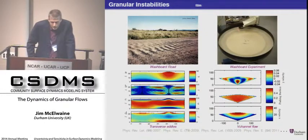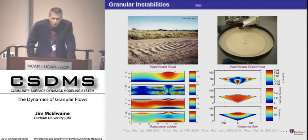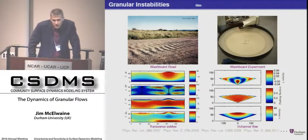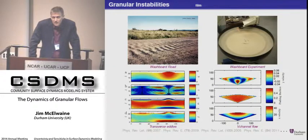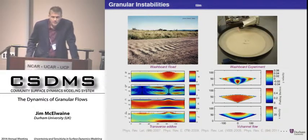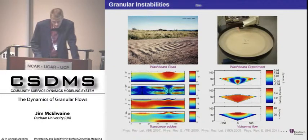In places like Arizona and Utah you get Washboard Road, which is a small-scale granular instability. There are lots of other types of patterns you can get — whether it's wind blowing sand around making ripples and dunes, or rivers leaving all sorts of bedforms at the bottom. By combining lab experiments, simulations, and field observations, we're trying to make progress in these areas.